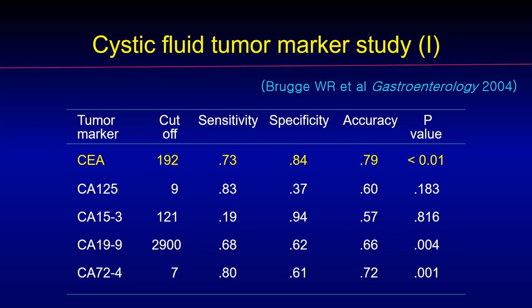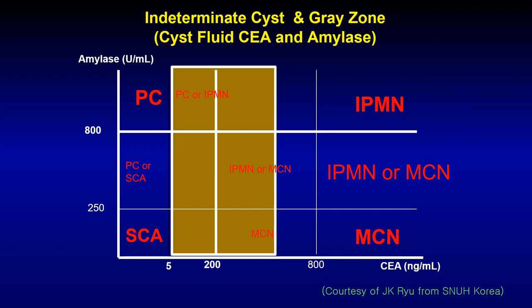This is Dr. Brugge's data published in Gastroenterology 2004. If CA is more than 192, the sensitivity, specificity, and accuracy of differential diagnosis of mucinous lesion from non-mucinous lesion were 73%, 84%, and 79% — quite a good result. However, follow-up studies showed a little different result. This is data from Seoul National University Hospital. From their analysis, CA level of 192 was not accurate enough, so they used a different cutoff value of 800 ng/mL. But even in this group, there were many cysts falling into the so-called indeterminate category. So it is clear that in a significant number of patients, the differential diagnosis is not clear even after cystic fluid analysis.